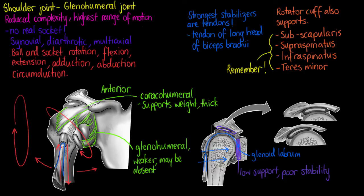In the next video I'm going to talk about the difference between a bursa and a tendon sheath — both are involved in the shoulder joint, but how do they differ? We're going to look at that next. That covers all of the basics we need to know about our shoulder joint. I hope this has been helpful and helped you understand how the shoulder joint works a little bit better. Thanks for watching and I'll see you again soon.